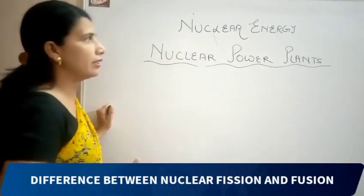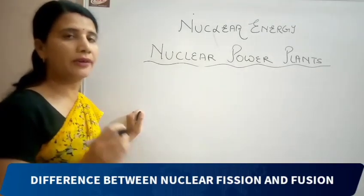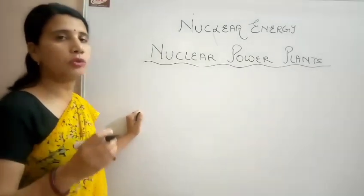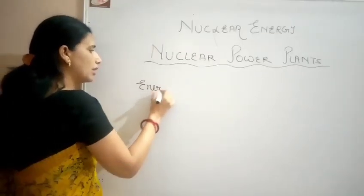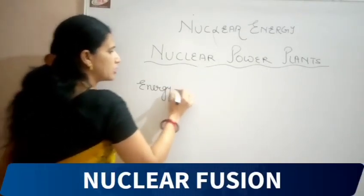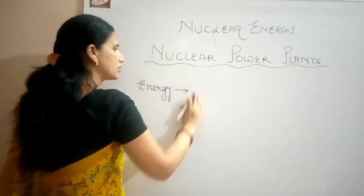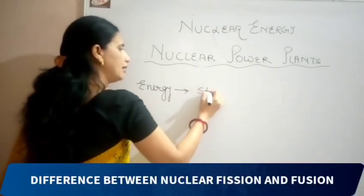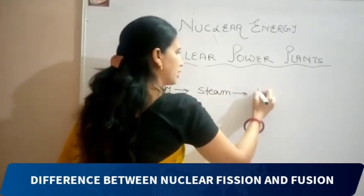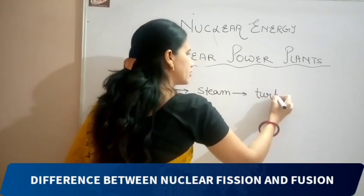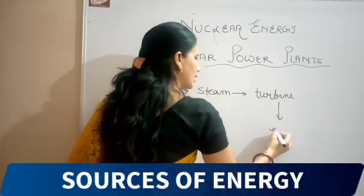As we have studied, when we burn a nucleus of uranium, it releases a large amount of energy. This energy is utilized in producing steam, and this steam runs the turbine and thus produces electricity.